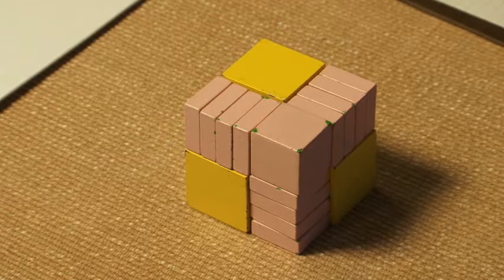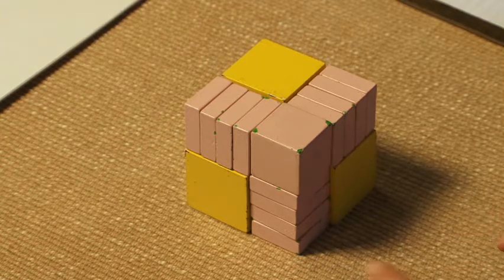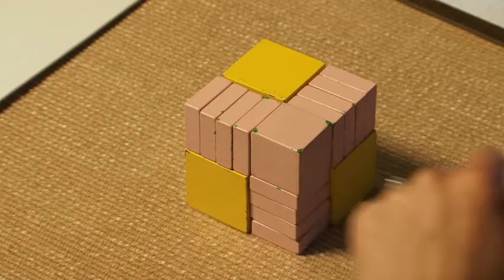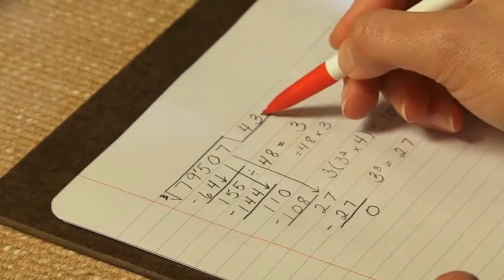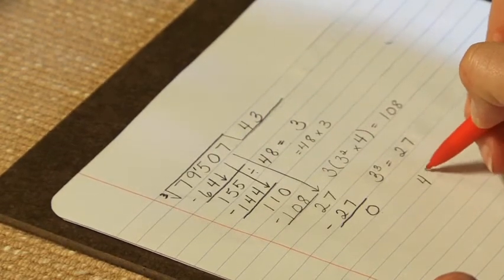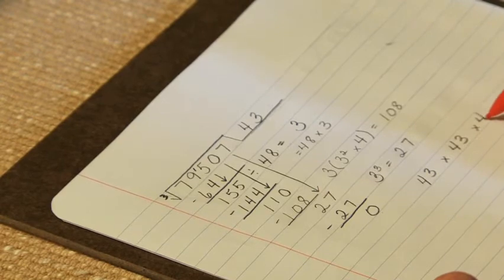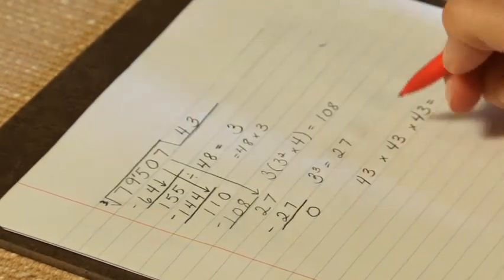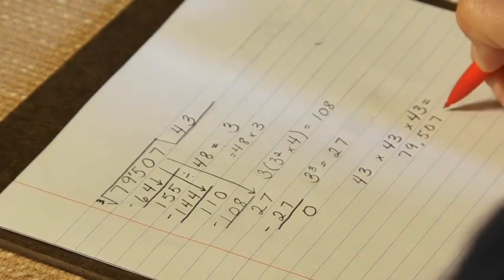We've finished our cube of 43, and we can check our work. We have four and three. We can also check our work on paper by taking 43 three times. That would be 43 times 43 times 43. The students can calculate that to equal 79,507.